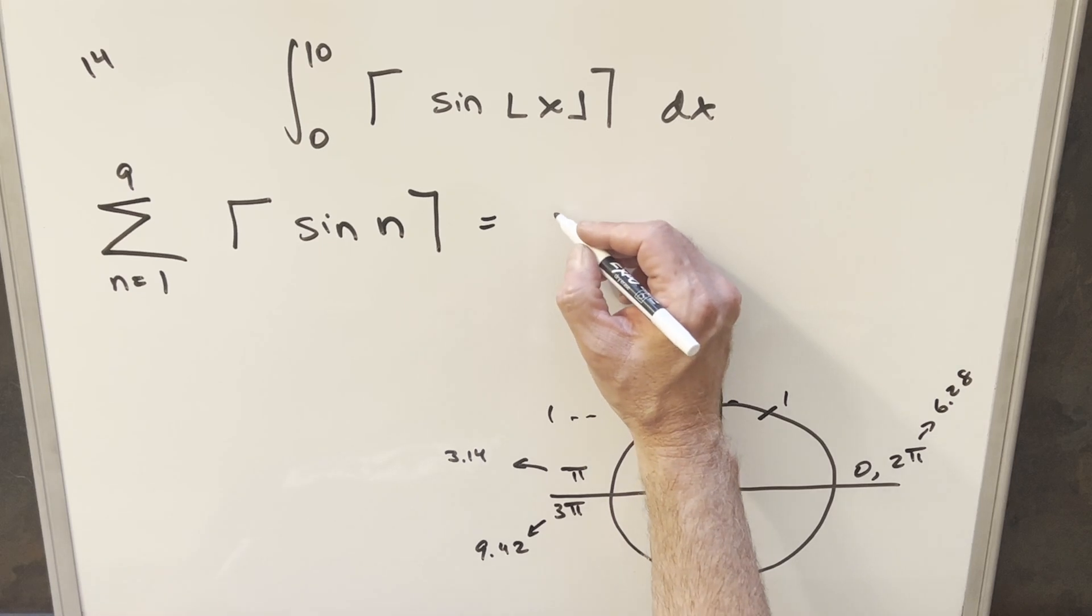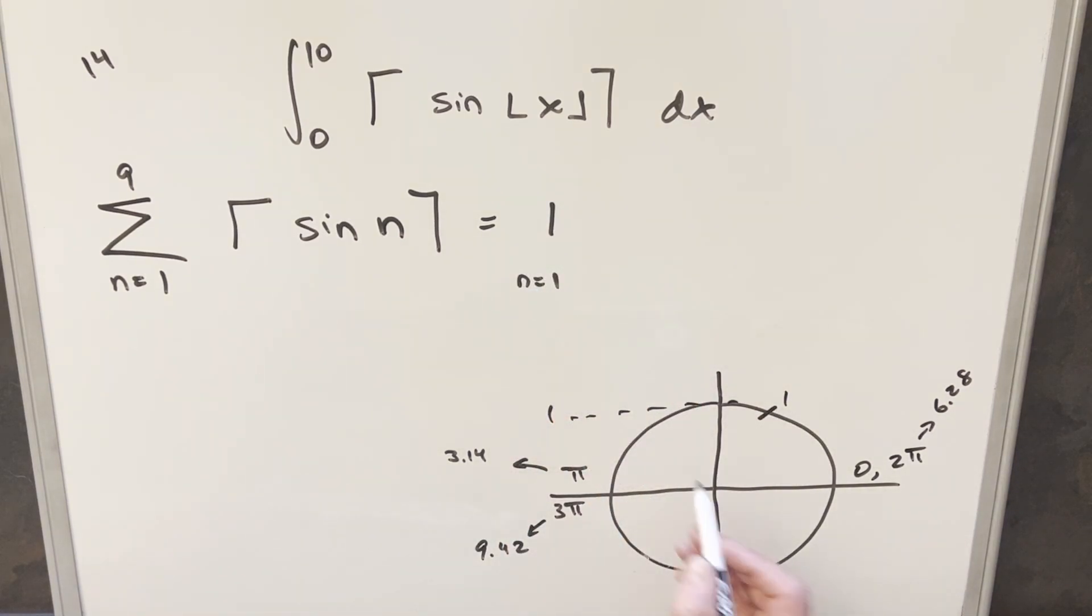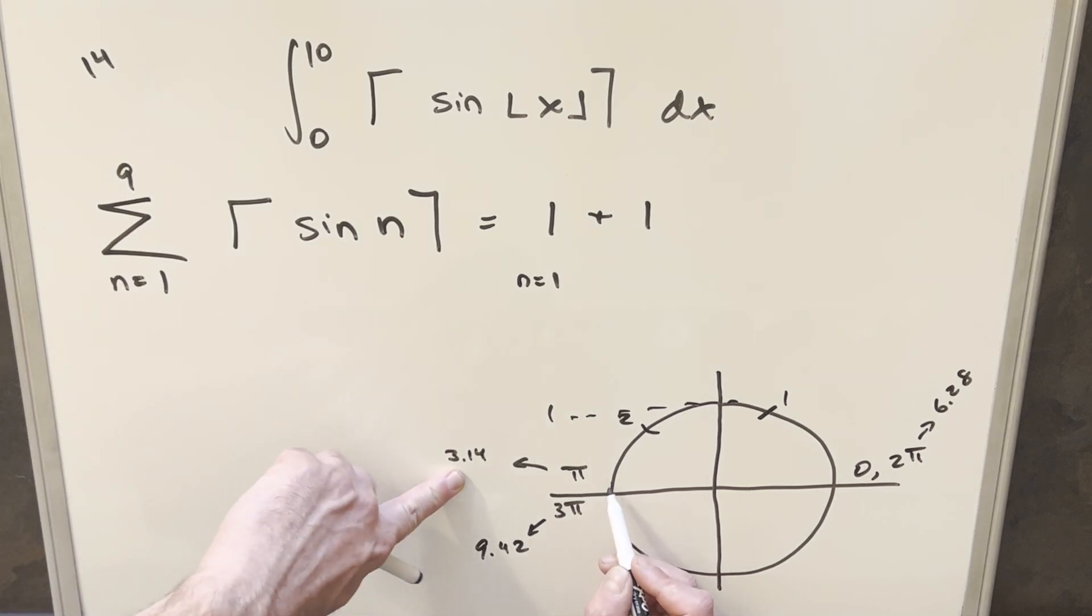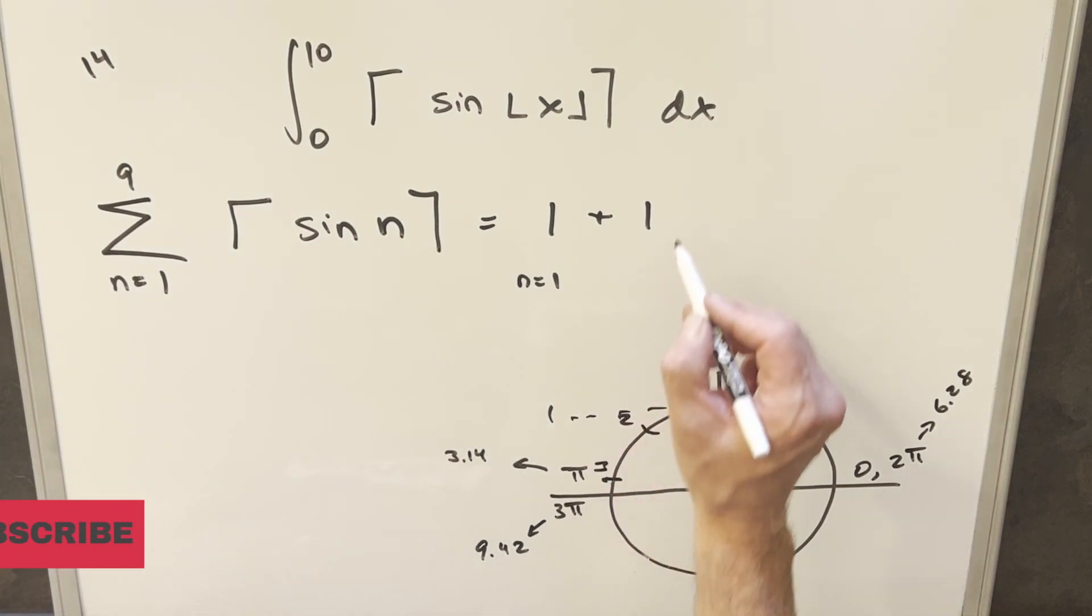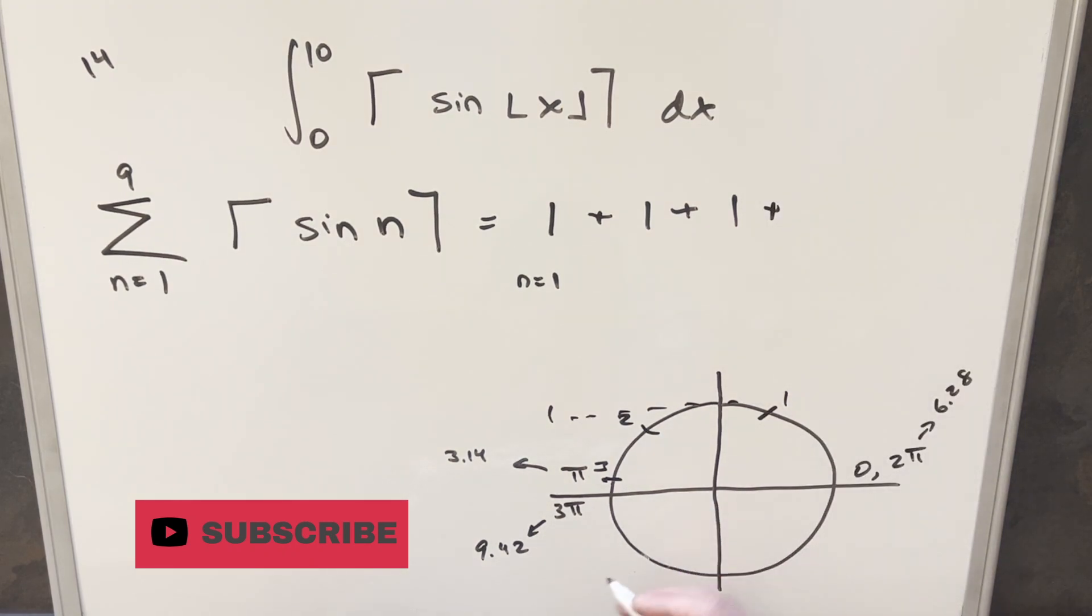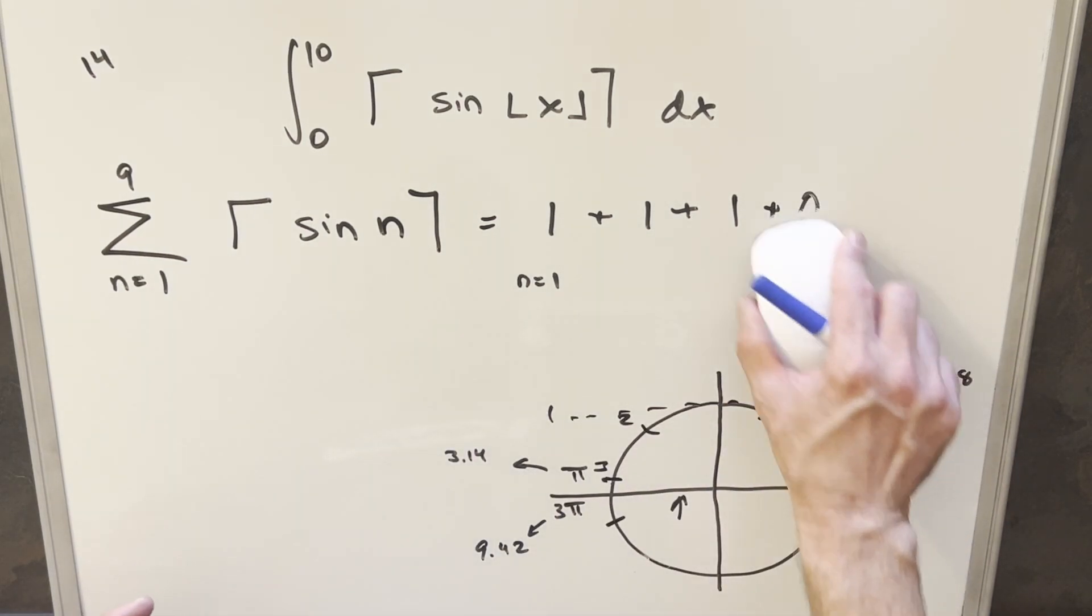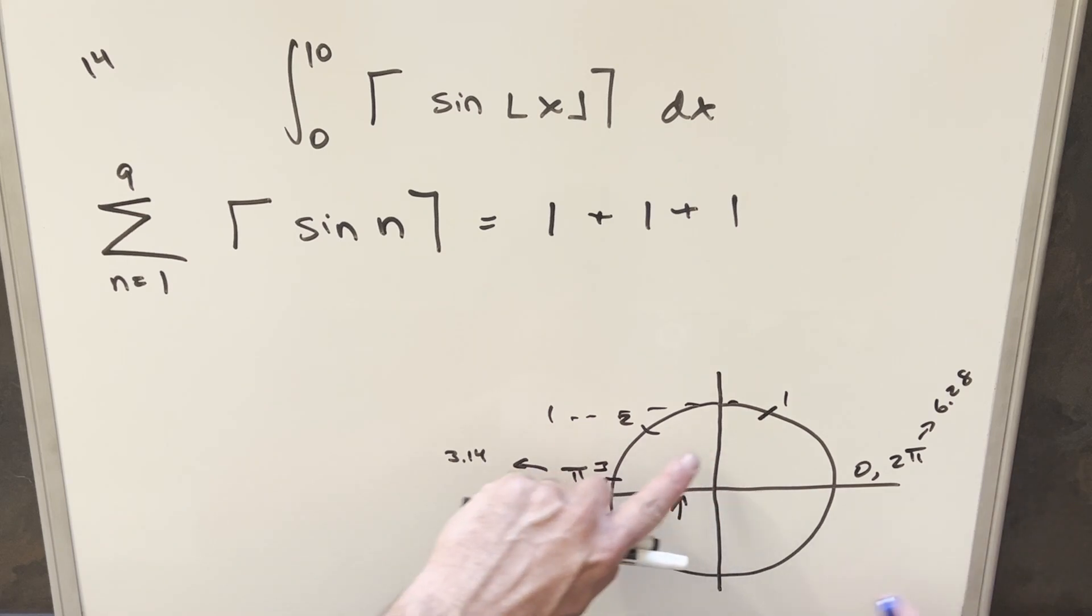So everything in these first two quadrants here is going to get rounded up to 1. So for our n equals 1 value, this is just going to round up to 1. Then for our 2 value, that's going to be about the same way. It's going to be somewhere in this region in the second quadrant. Again, that's going to get rounded up to 1. And then even for 3, it's getting close to this pi value here, 3.14. We'll put it right there, but it's still just getting rounded up to 1. And then for n equal 4, that's going to be somewhere down here in the third quadrant. The ceiling in this region is going to round us up to 0, because all these values are going to be between minus 1 and 0. So these are all going to get rounded up just to 0. And so really, in order to move this along, rather than going through each value, we just need to know what quadrants they're going to fall into. Everything in quadrants 1 and 2 is going to get rounded up to 1. Everything in quadrants 3 and 4 is going to get rounded to 0.